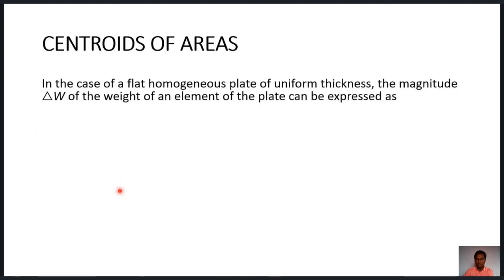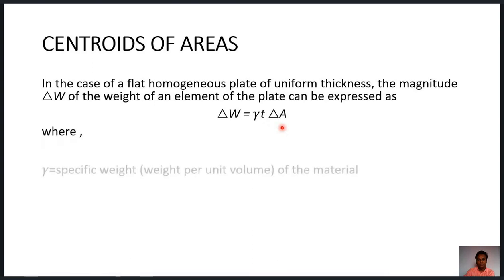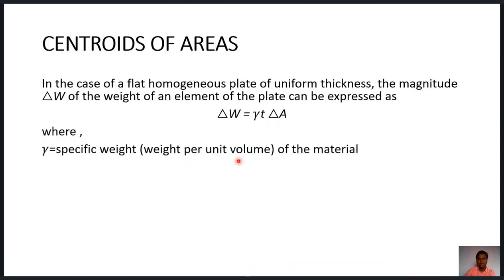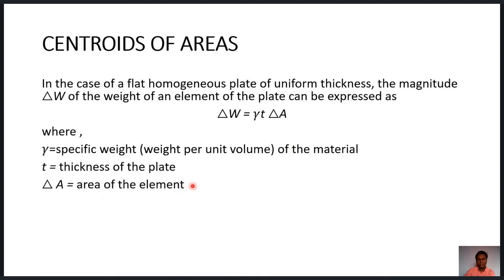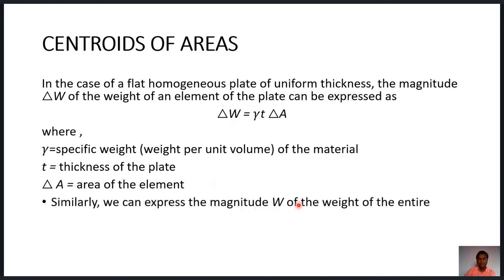Now let us see how to convert center of gravity into centroid, or basically the difference between center of gravity and centroid. For a flat homogeneous plate of uniform thickness, the weight of a small element can be expressed as δw = γ·t·δA, where γ is the specific weight (weight per unit volume), t is the thickness of the plate, and δA is the area of the element. Multiplying the specific weight by the volume t·δA gives the weight of the small element.